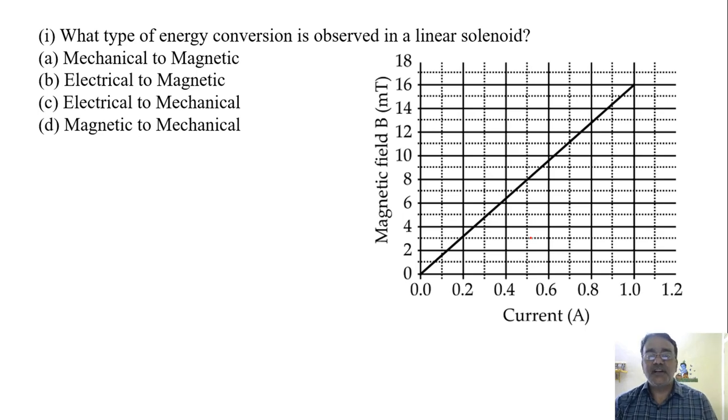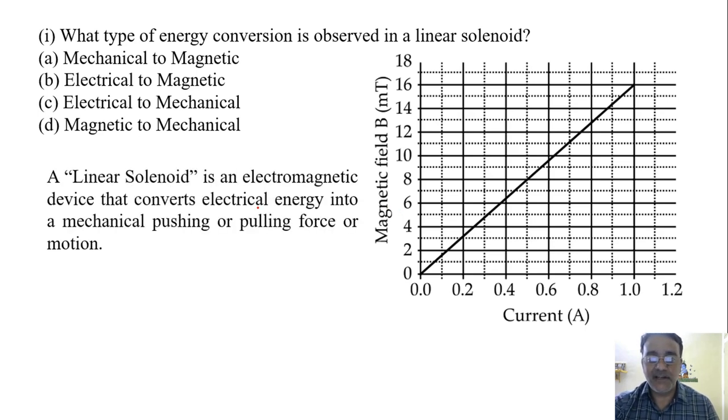What type of energy conversion is observed in a linear solenoid? So linear solenoid is an electromagnetic device that converts electrical energy into mechanical pushing or pulling force or motion. So the correct option is C1.